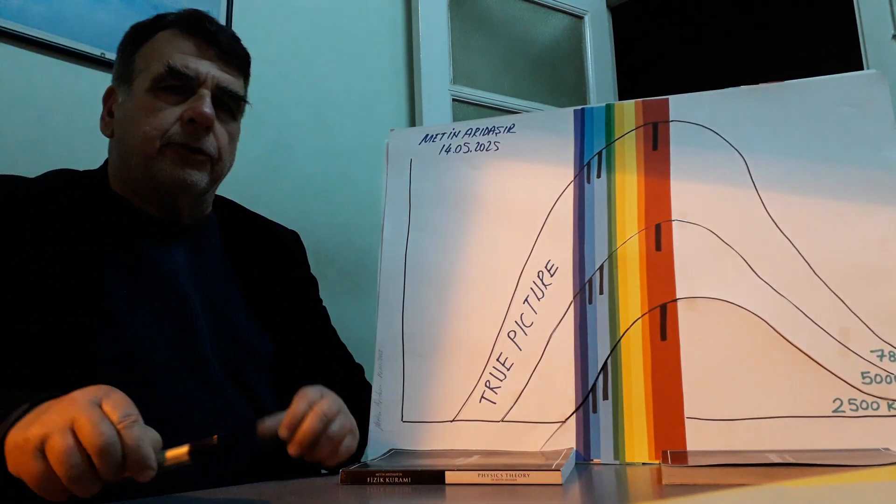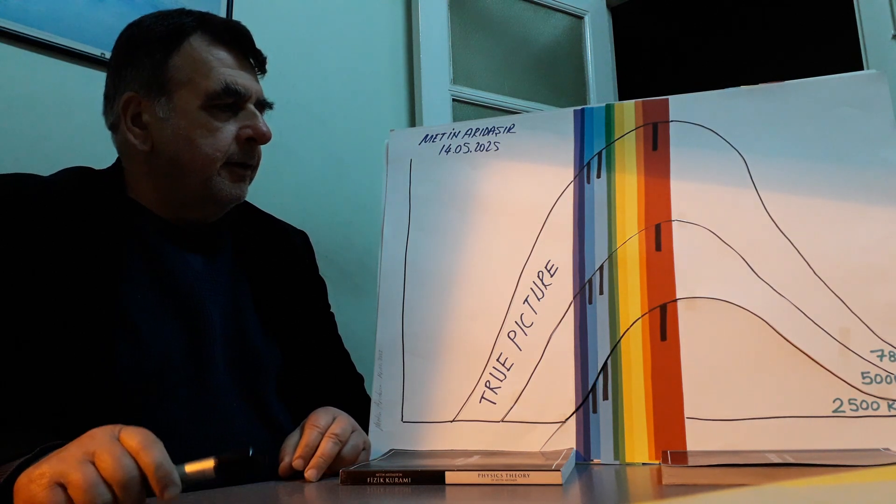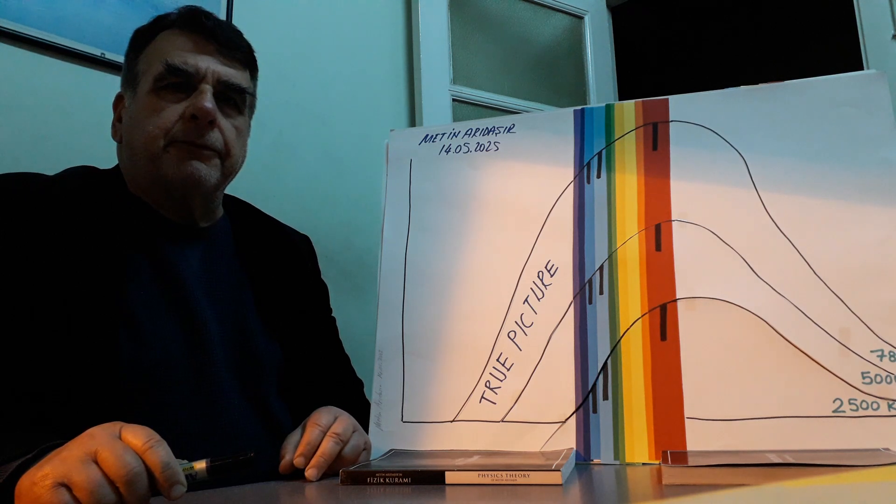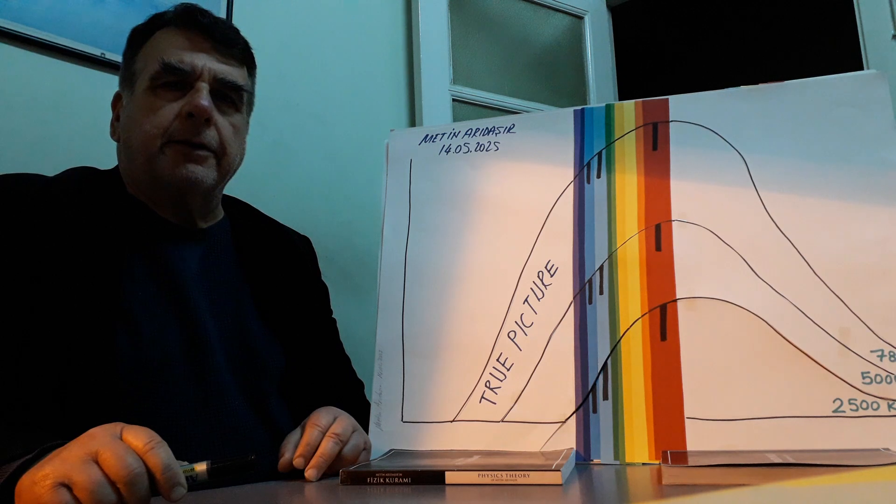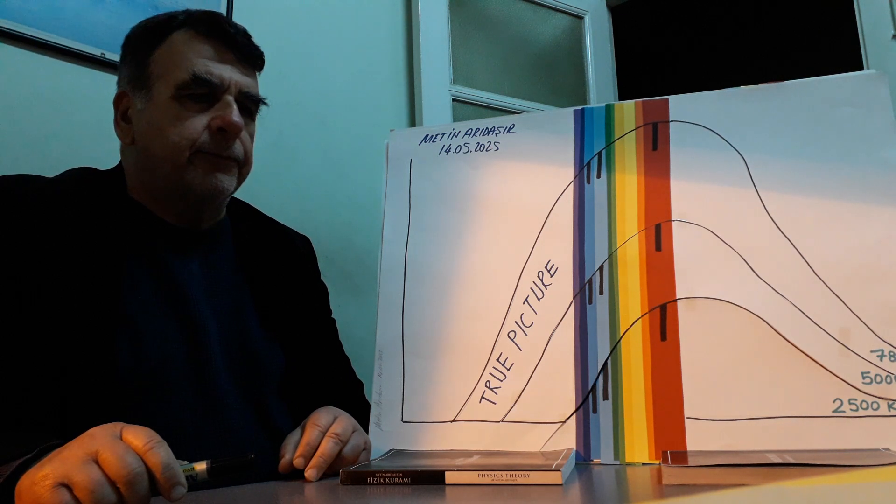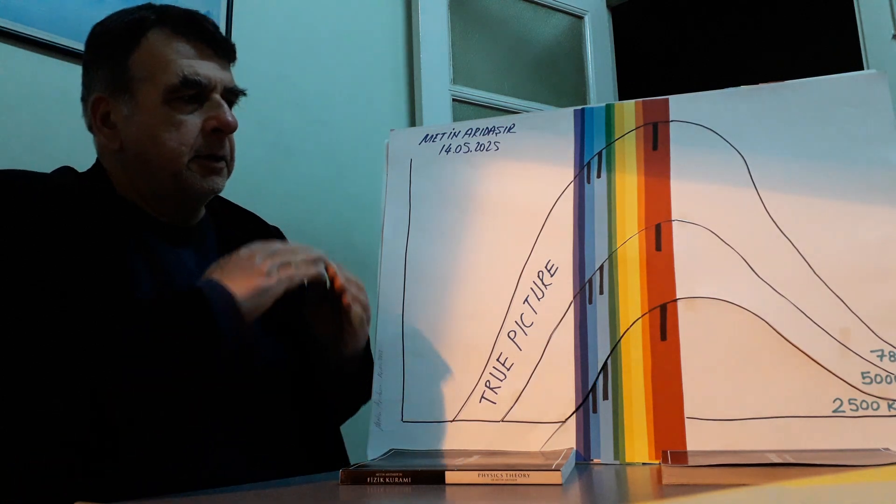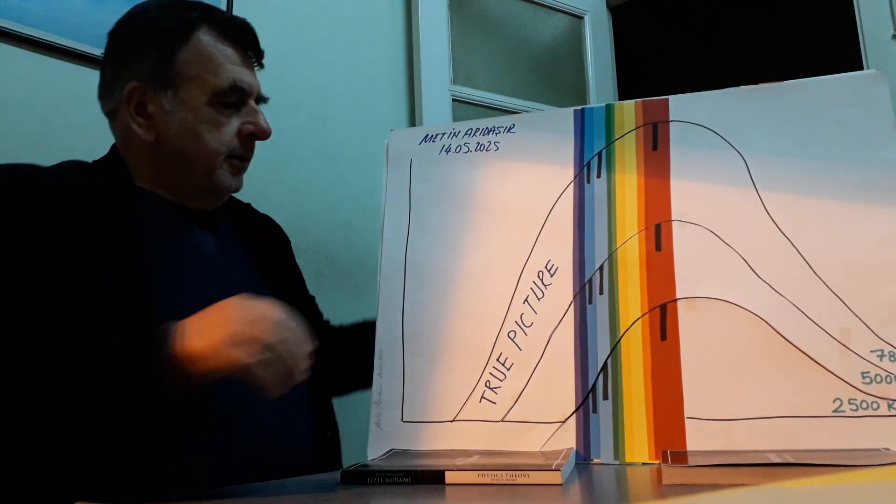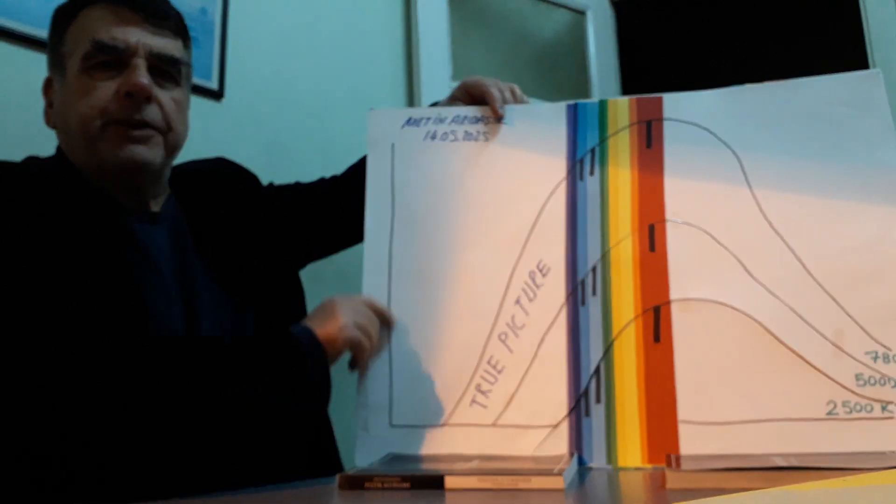According to my theory and my formulas, accepted physics theories are under the illusion of spectral line shift.